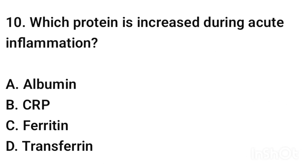Question number 9. Which protein is increased during acute inflammation? The correct answer is option B: CRP (C-Reactive Protein).